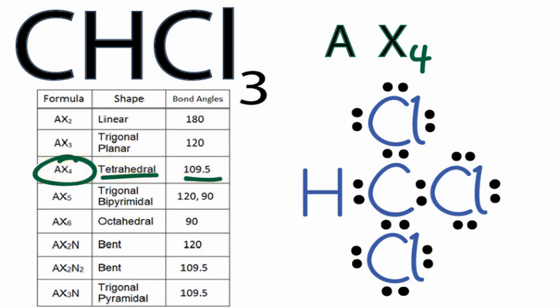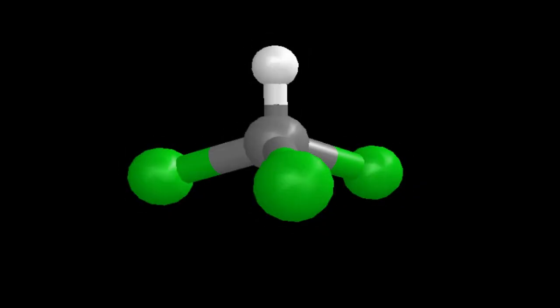If we look at the tetrahedral molecular geometry here for CHCl3 in three dimensions, we can see what it looks like. Here the chlorines are the green. In the center, we have the carbon, and the white is the hydrogen. So you can see we have all those chlorines on the bottom, and then on the top, we have the white, which is the hydrogen.